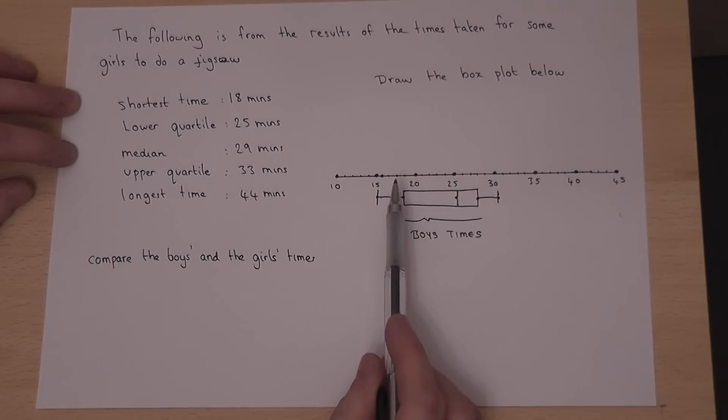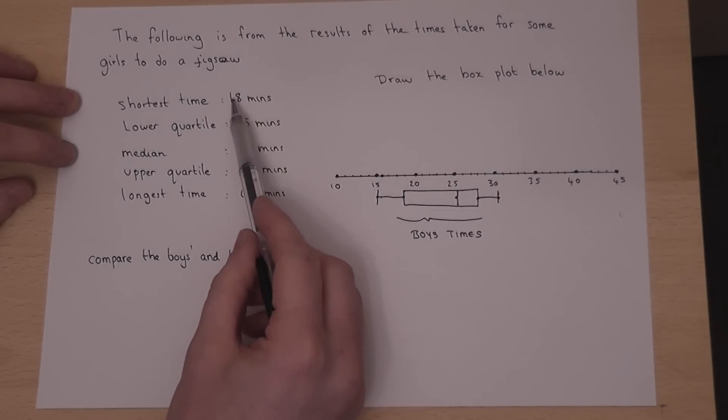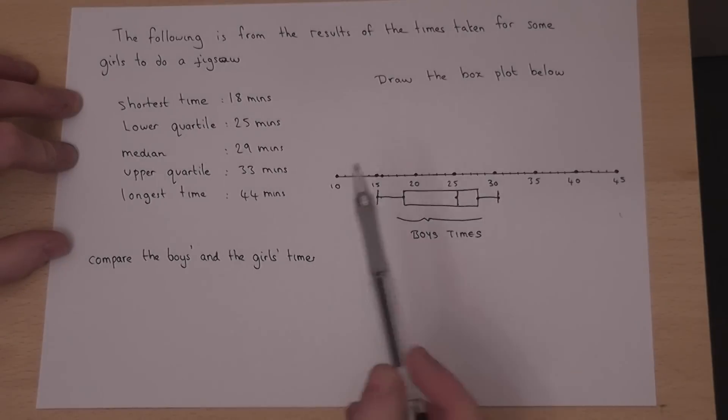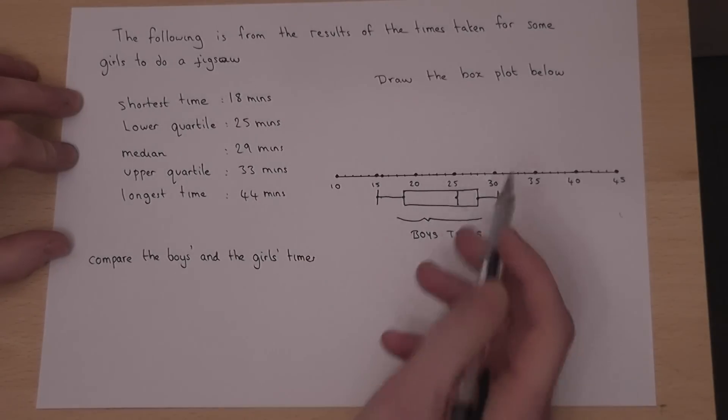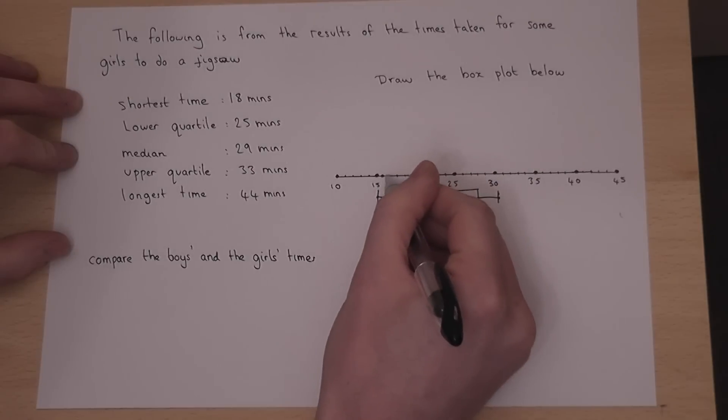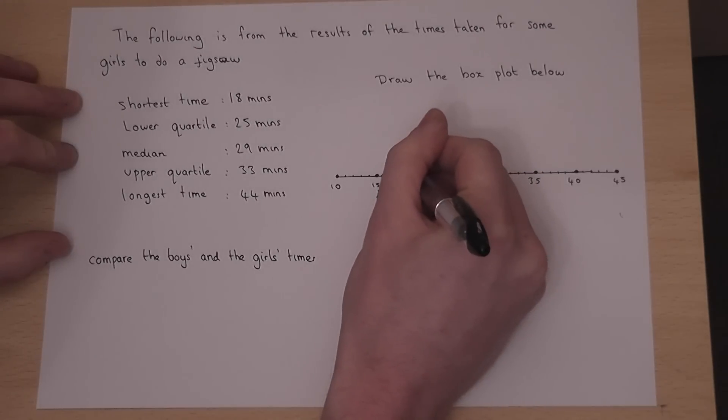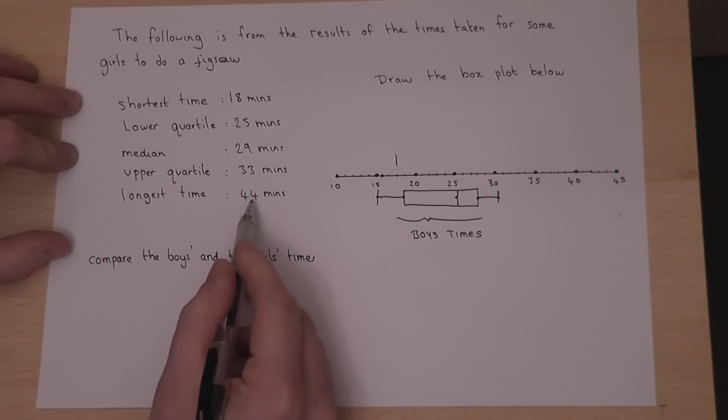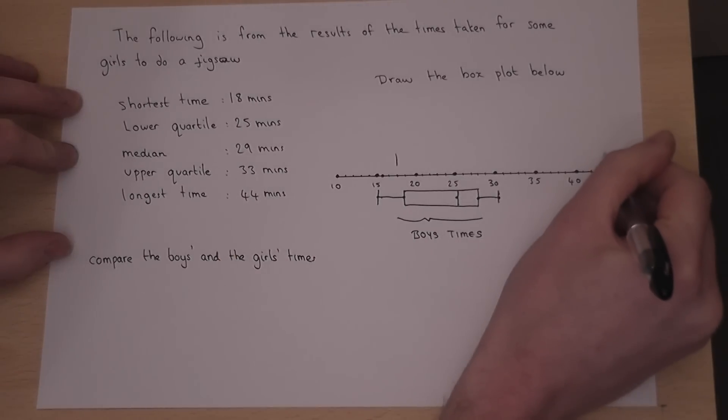Now on a box plot we put a line at the shortest and the longest time. So the shortest time is 18 minutes, so 15, 16, 17, 18, and a line at the longest time of 44 minutes.